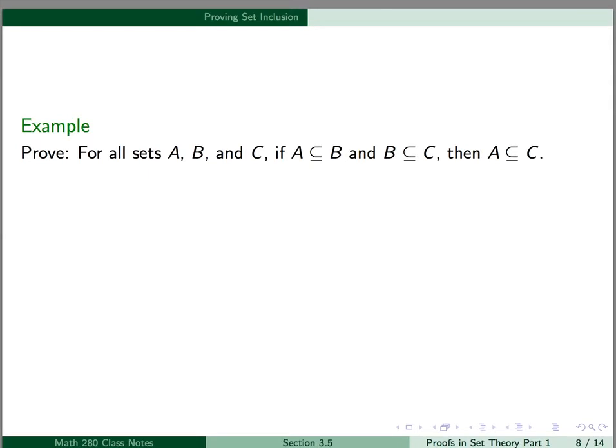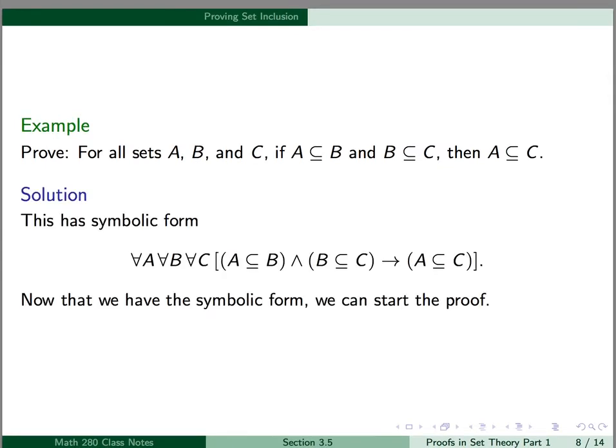For an example, let's look at this: we want to prove that for all sets A, B, and C, if A is a subset of B and B is a subset of C, then A is also a subset of C. The first step is to write this in symbolic form: for all A, for all B, for all C, A⊆B and B⊆C implies A⊆C. Now that we have the symbolic form, we can start the proof.